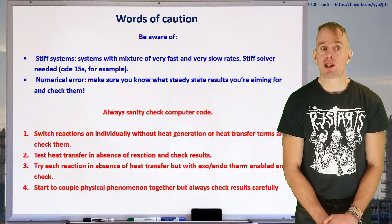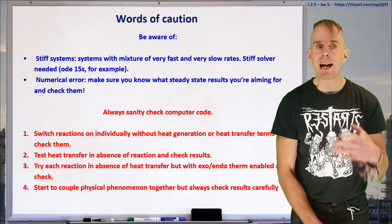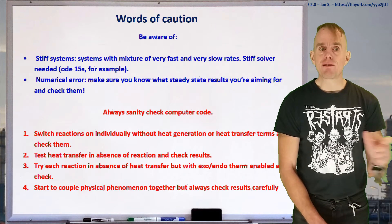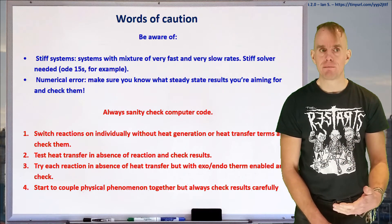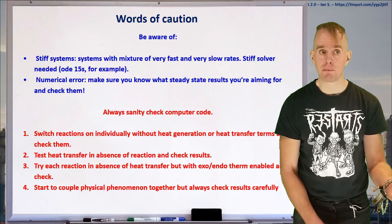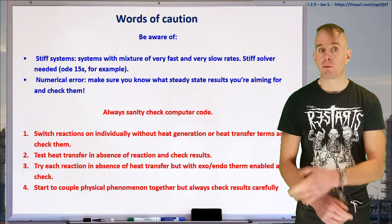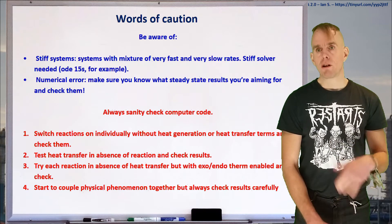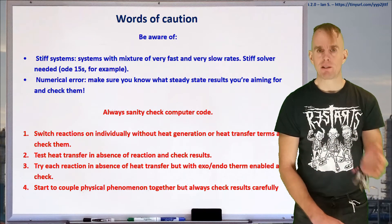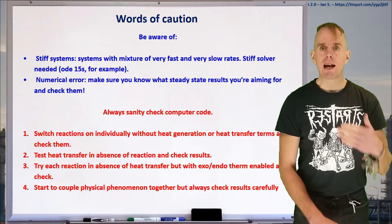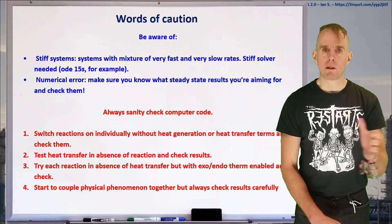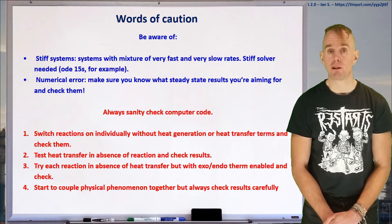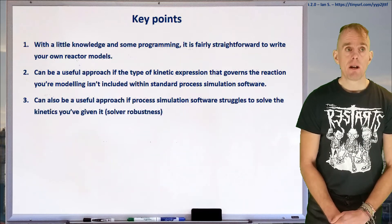Don't assume computer code you write is correct first time. Check it carefully. For example, switch reactions on and off with and without heat generation and make sure mass and energy balances add up. Test the heat transfer in absence of reaction and see if energy balance adds up. Try each reaction without heat transfer but with exotherm and endotherm enabled. Then start to couple physical phenomena again. Always check your code, know what the answer should be, know the steady state, and have back of the envelope calculations to compare to.